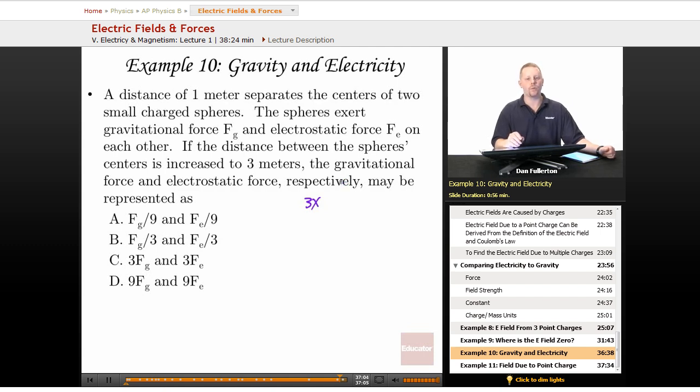This is an inverse square law problem again. We have tripled the distance, because distance is squared, we're going to have a change by a factor of nine. Now is that gonna be nine times greater force, or one-ninth the force?